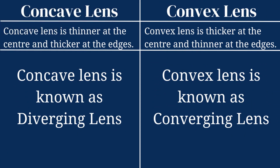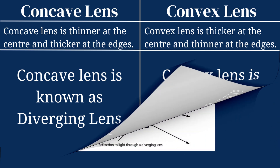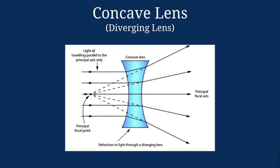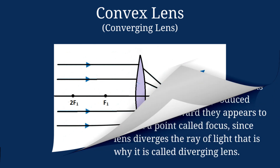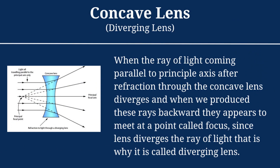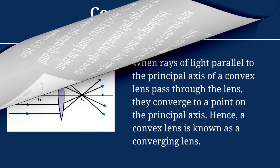Why is the concave lens called a diverging lens? In the case of a concave lens, when the ray of light coming parallel to the principal axis passes through the concave lens, it diverges. When these rays are produced backward, they appear to meet at a point called the focus. Since the lens diverges the ray of light, concave lenses are called diverging lenses.